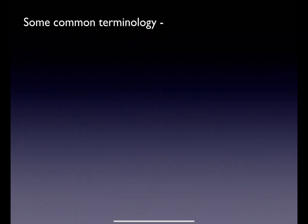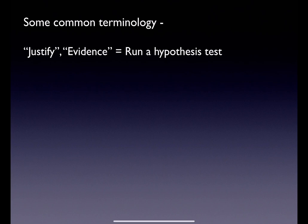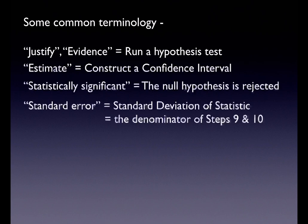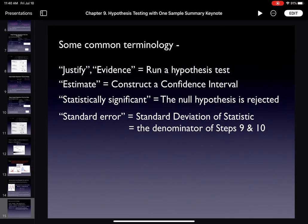Some common terminology: if you hear 'justify' or 'is there evidence,' run a hypothesis test. If you hear 'estimate a parameter,' construct a confidence interval. If asked whether the data are statistically significant, it's a yes or no — if you rejected the null, the data are statistically significant, meaning significant enough to reject the status quo. Standard error is always the denominator in steps nine and ten — it's the standard deviation of your sampling distribution, as we discussed in Chapter 7. That's Chapter 9. Thanks so much, and I will see you later.